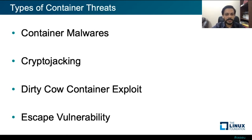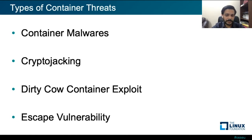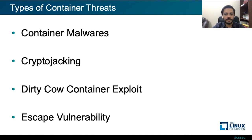Another container threat is the Dirty COW container exploit. Attackers exploit a kernel bug to override a set-UID program in the system, which allows the user to temporarily elevate privilege in order to perform a certain task. By replacing the set-UID program, the attacker gains root access privilege when the program is executed. This threat is not removed if the compromised container is removed, resulting in a situation where container immutability is broken. An example of a set-UID program that could be compromised in a Linux system is /etc/passwd.